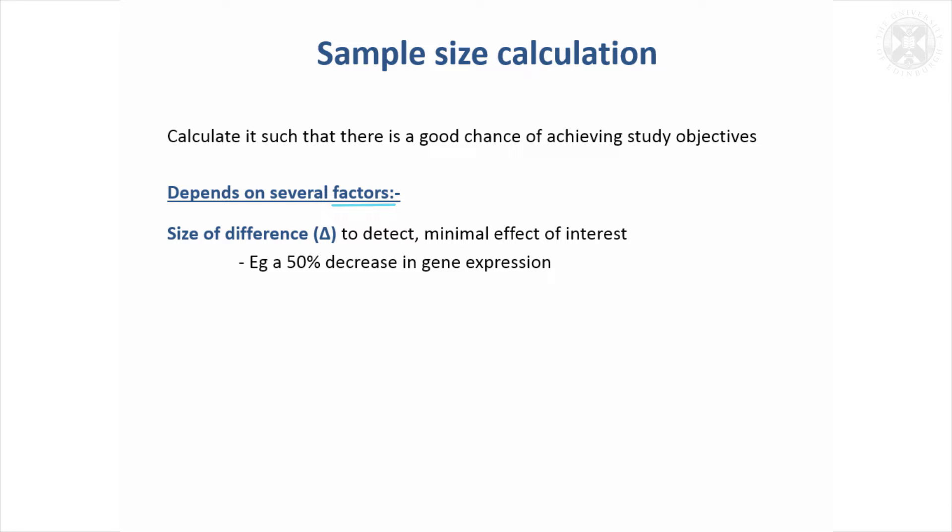The first one, which I think is often the hardest one people find to get their heads around, is the size of the difference that you want your study to be able to detect. Sometimes that's given by delta, which is a Greek symbol in the formulae. People will say to me, well, I don't know what size of difference I'm going to get, but that doesn't really matter.